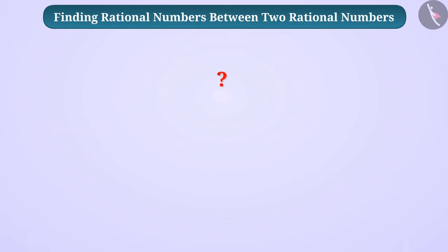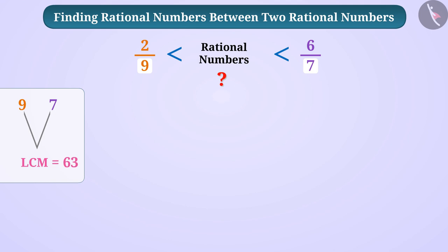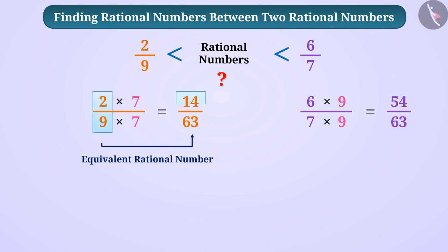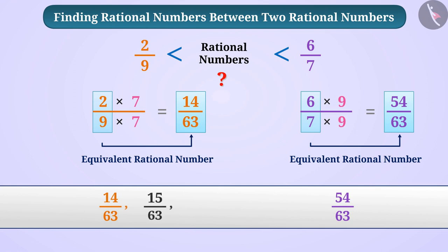Suppose we have to find rational numbers between 2 by 9 and 6 by 7. For this we will first make the denominator the same for both rational numbers. Since LCM of denominator 9 of 2 by 9 and 7 of 6 by 7 is 63, we will multiply numerator and denominator of each rational number by a suitable number to make the denominator 63. We get the equivalent rational number of 2 by 9 as 14 by 63 and 6 by 7 as 54 by 63.